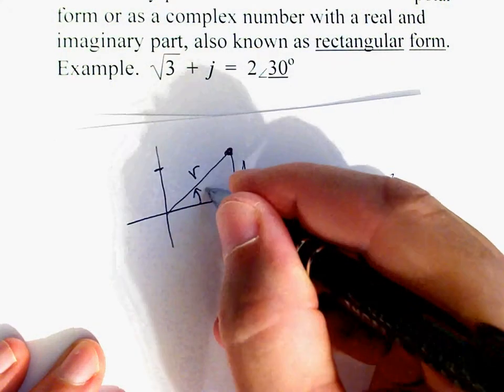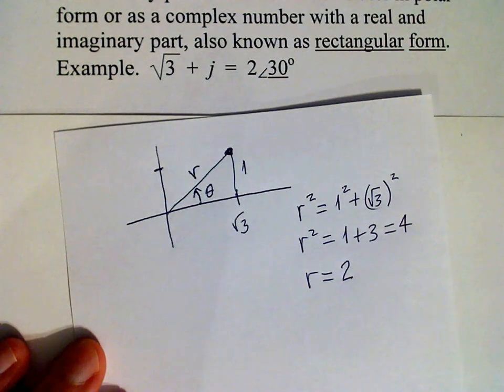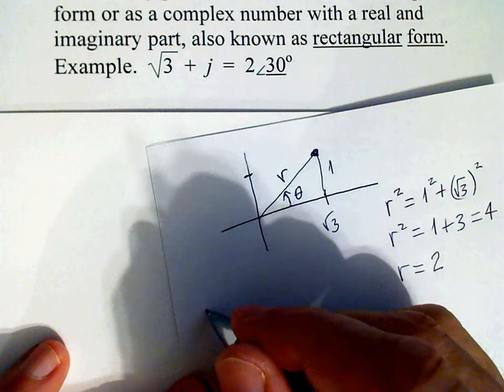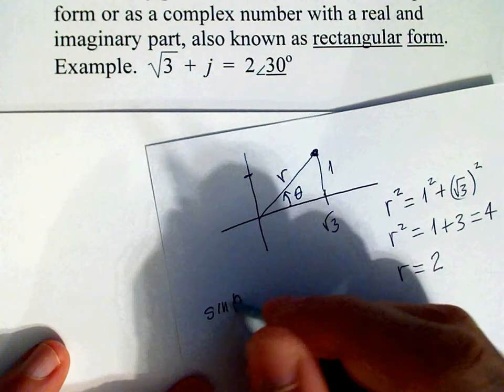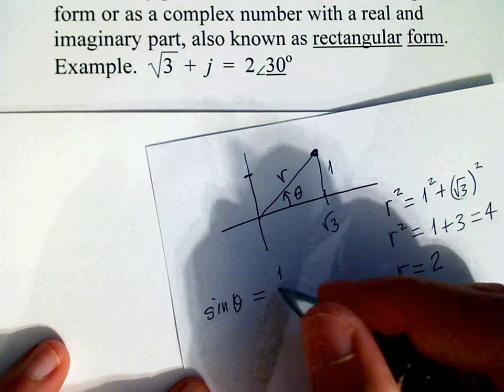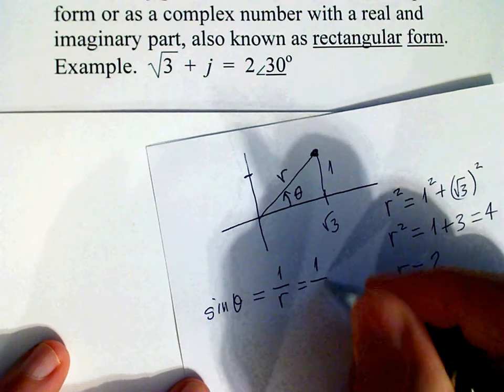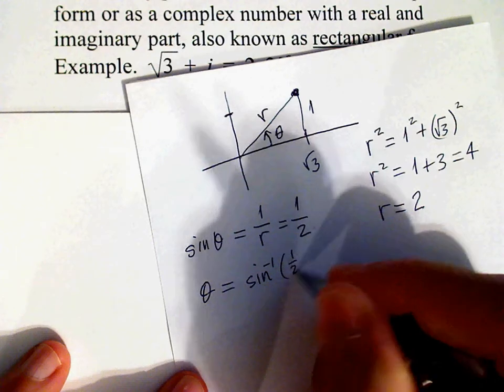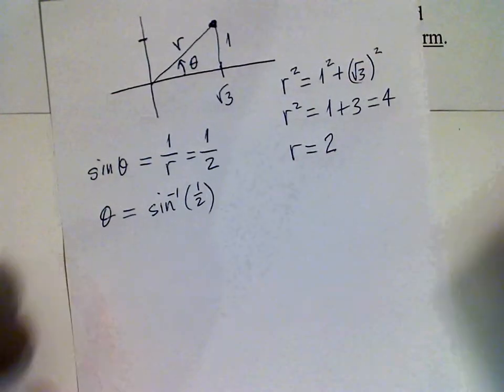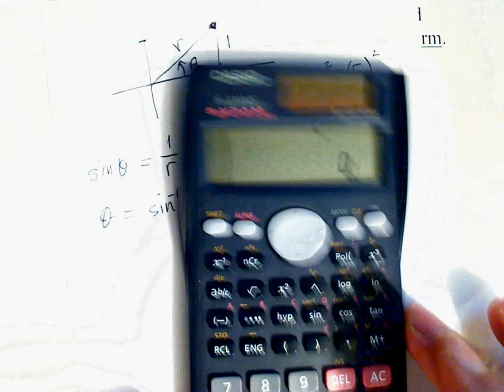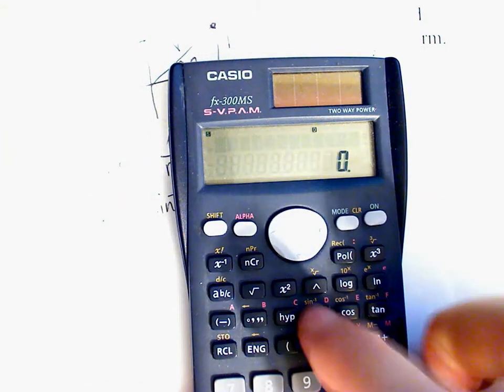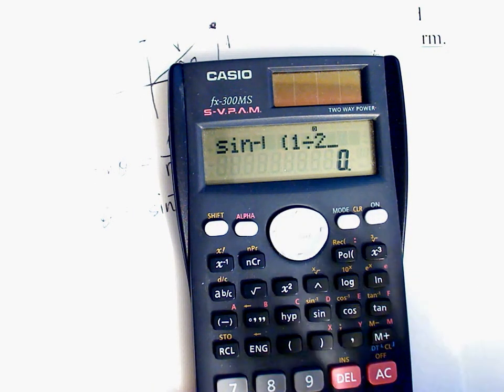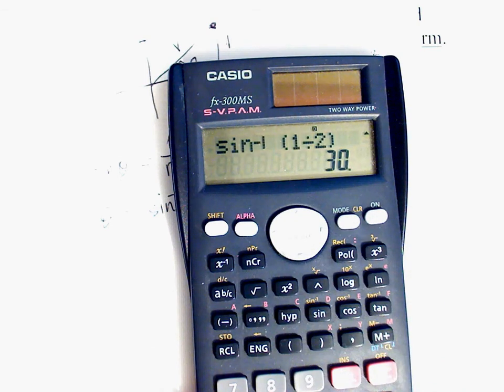Now if we would like to find this angle θ, probably the easiest way to do it is to use the inverse sine. We know that sin(θ) equals 1 over r, in this case 1 over 2, and therefore θ equals the inverse sine of 1/2. Inverse sine of 1/2, the answer is 30 degrees.